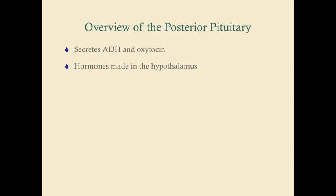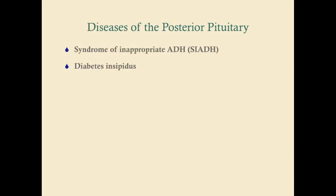The posterior pituitary is really just a conduit for hormones to come from the hypothalamus and be released into the bloodstream. While the posterior pituitary secretes both ADH (antidiuretic hormone, otherwise known as vasopressin) and oxytocin, there are no real clinically significant diseases of oxytocin secretion, so the only diseases we'll discuss are related to ADH.